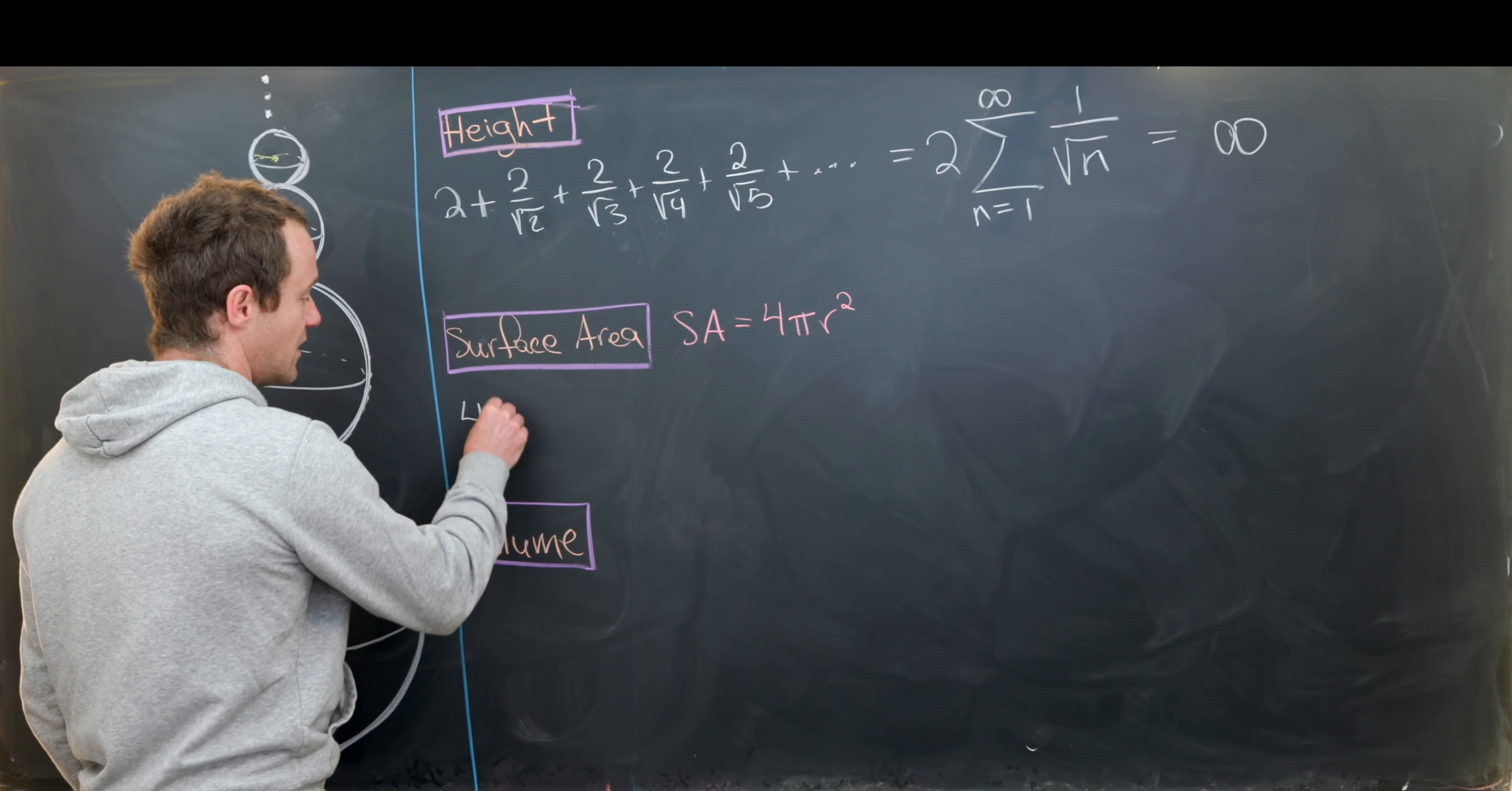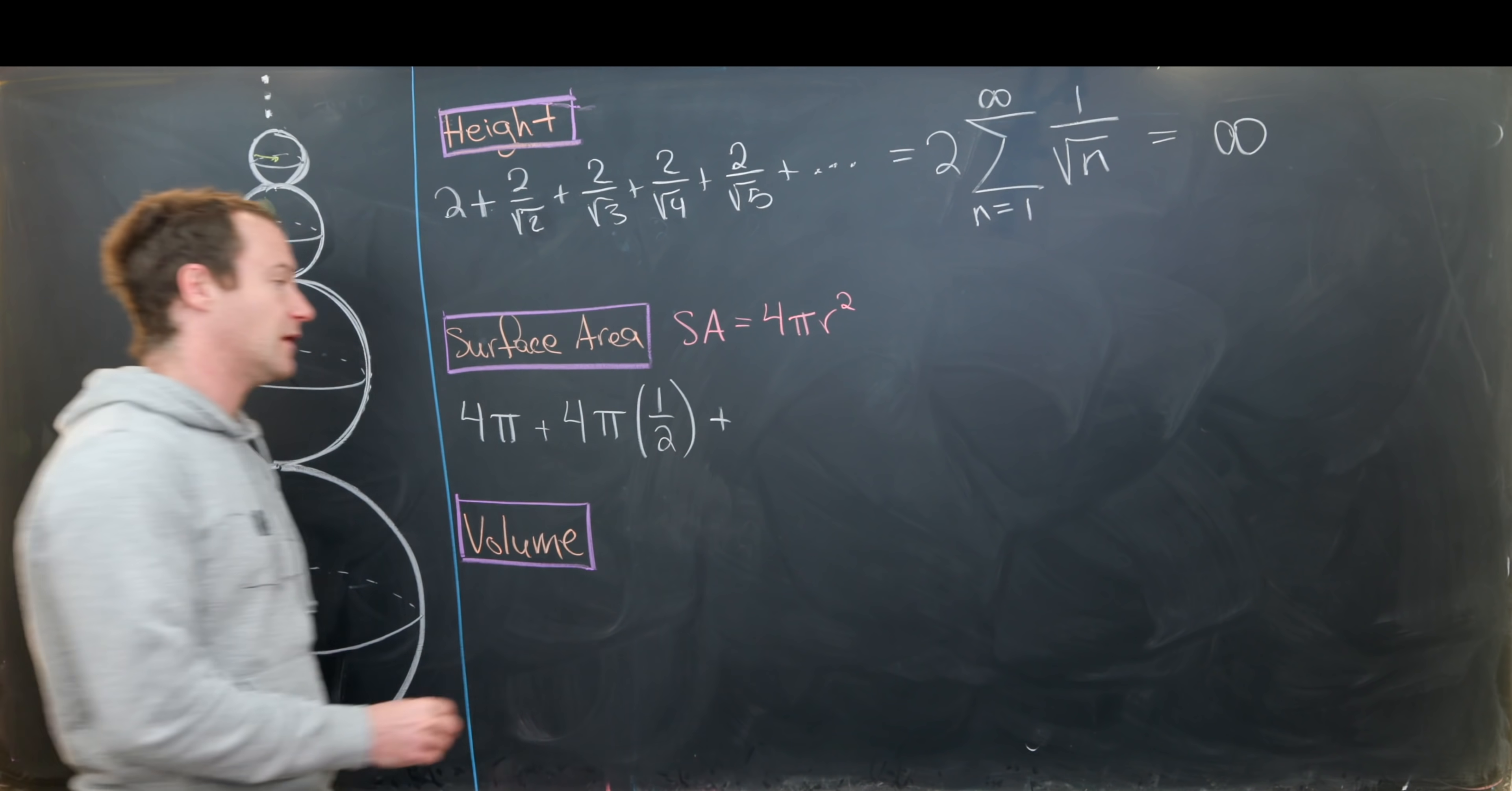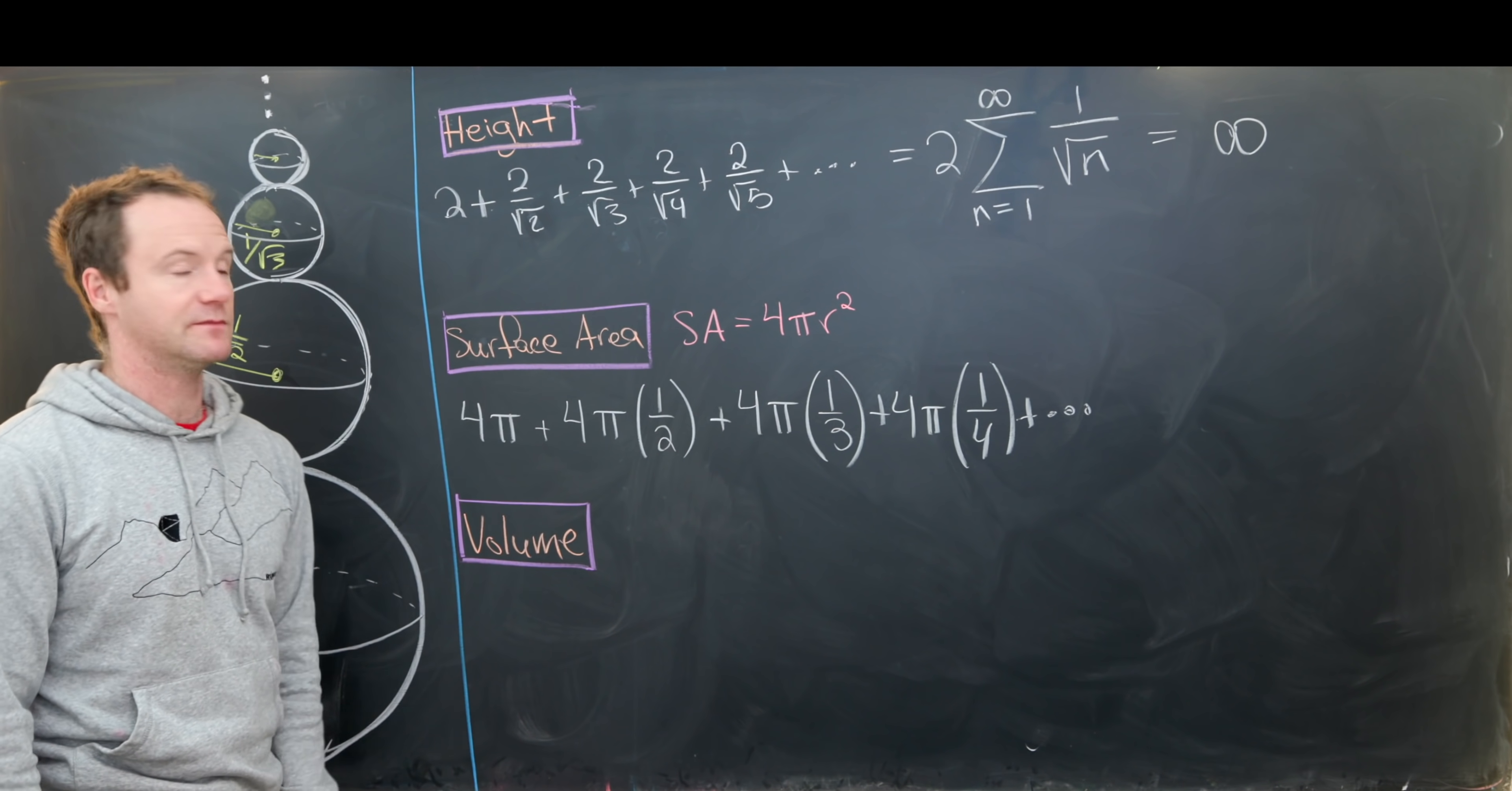So that means we're going to start with four pi times one squared, so that's just four pi. And then next we'll have four pi times one over the square root of two squared, but that's just going to give us a half. So that's nice. The square is going to kill the square root. And then we have four pi times the square root of three squared, but that's just going to give us a third. Again, those cancel. And then you can see where we're going here. We have four pi times a fourth, and this extends infinitely.